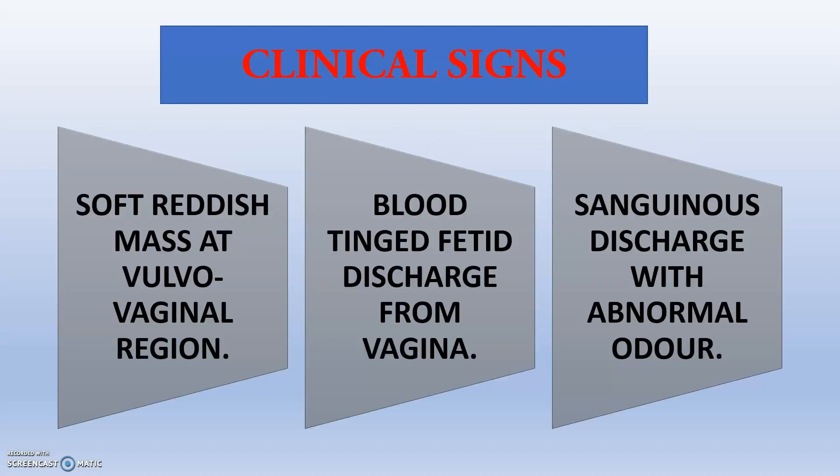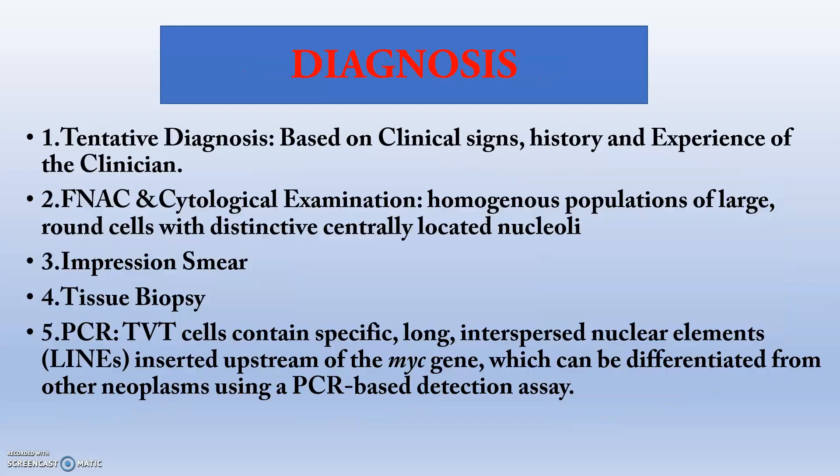Further clinical signs include a soft reddish mass at the vulvovaginal region, blood-tinged fetid discharge from the vagina — not due to hematuria or problems associated with reproductive structures — and sanguineous discharge with abnormal odour.